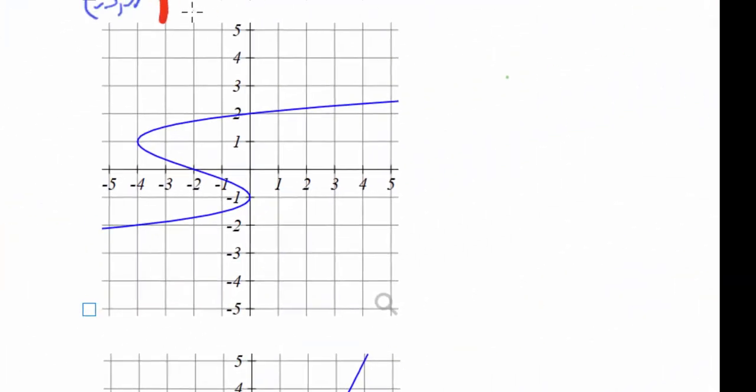But if there are vertical lines, or at least one vertical line, that will cross the graph more than one time, here this vertical line crosses one, two, three times, then this graph does not represent a function.